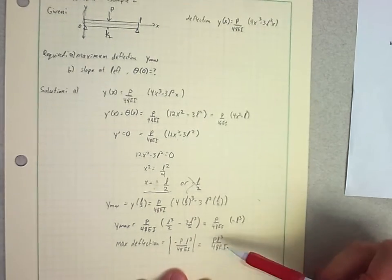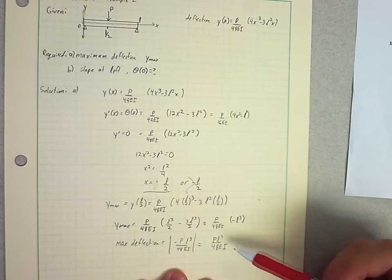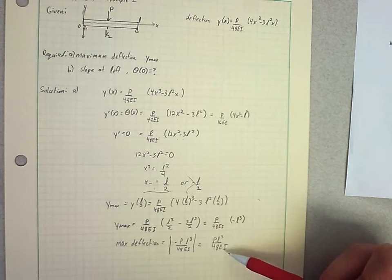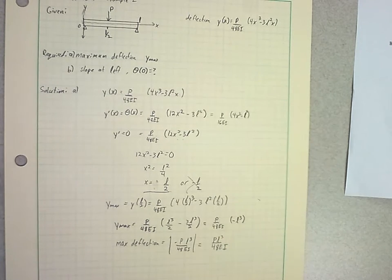I just want to know what's the most the beam is being pushed away from where I want it to be. And so I actually just end up taking the absolute value of that, and so the maximum deflection is P times L cubed over 48 EI. That's how I would end up down there.